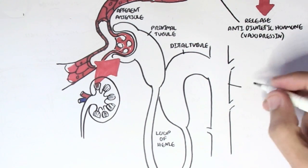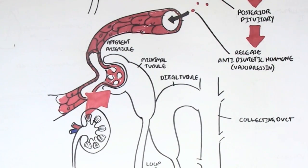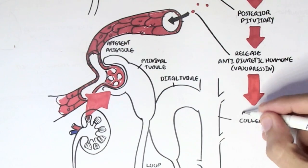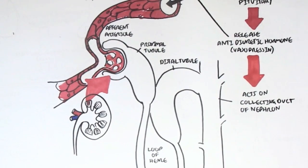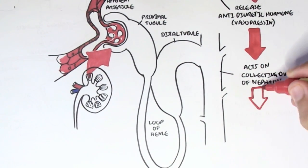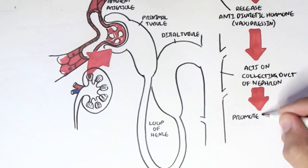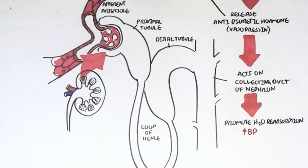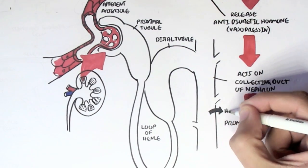Antidiuretic hormone gets secreted by the posterior pituitary in response to a decrease in blood pressure. It will travel to the nephron and act on the collecting ducts to promote water reabsorption. By promoting water reabsorption, it increases plasma volume and therefore increases blood pressure.